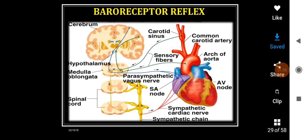Conversely, whenever there is a decrease in the blood pressure, the baroreceptors are not stimulated and the information will not go to the sensory area. The vasomotor center is not inhibited and the cardiac inhibitory center is not facilitated. So there is an increase in the sympathetic drive that increases the blood pressure, and inhibition of the cardiac inhibitory center increases the heart rate.